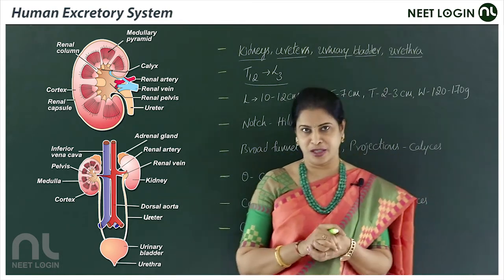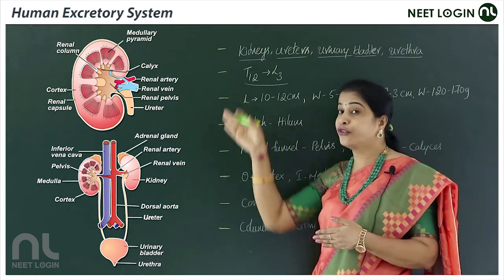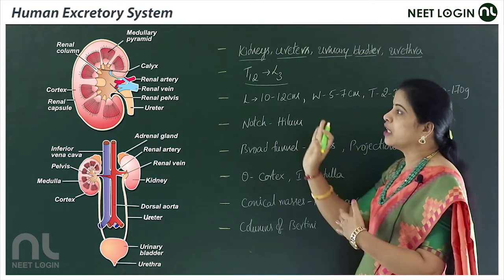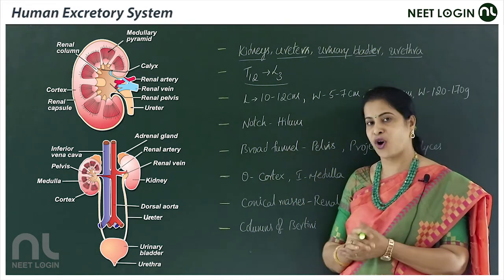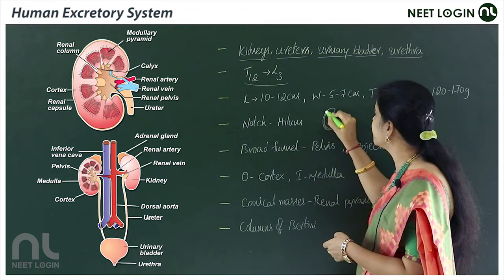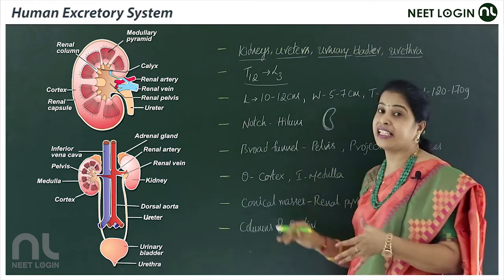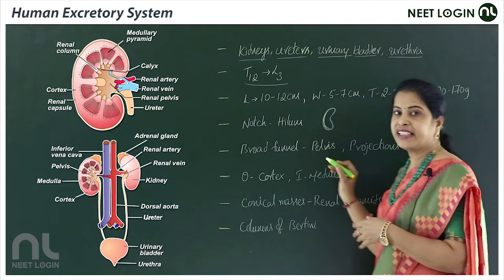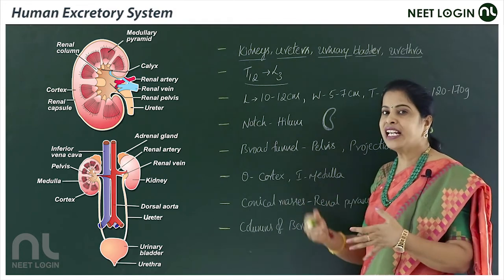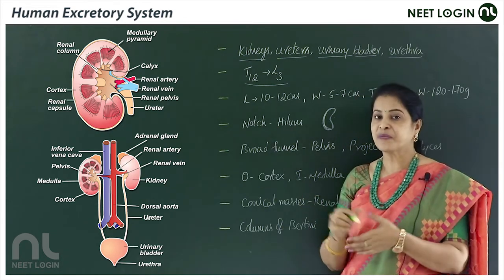In the sectional view of the kidney, the outer surface is convex and the inner surface is concave, like the shape of a bean. On the inner concave side, there is a notch called the hilum. From the hilum, the renal artery enters and the renal vein exits, along with nerves and lymphatic vessels.